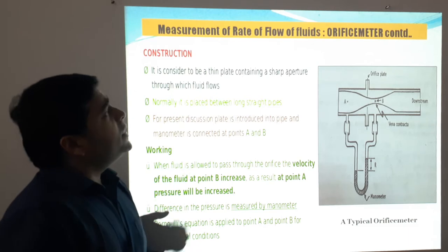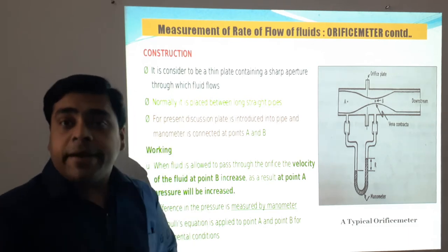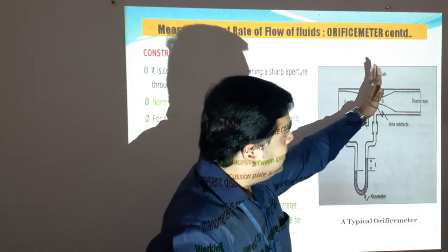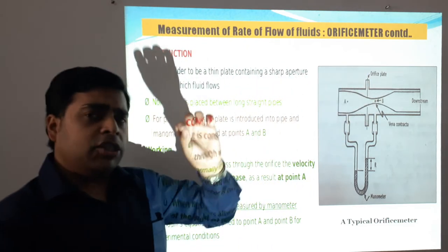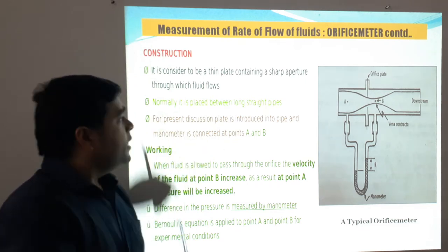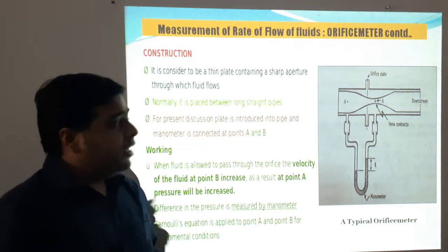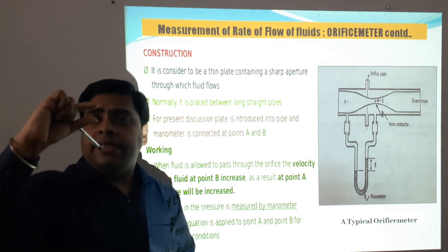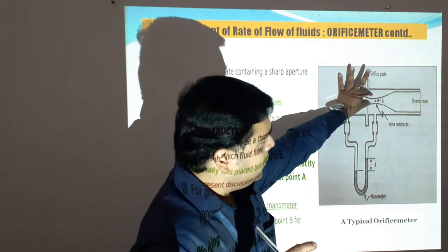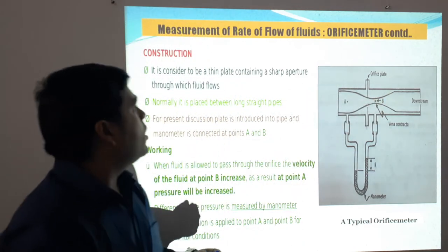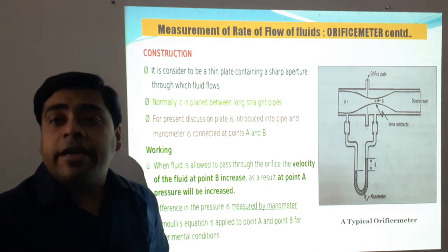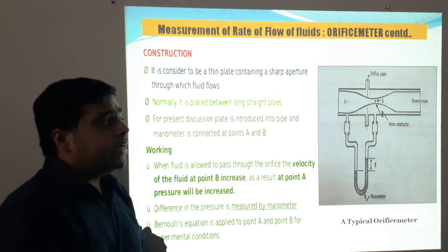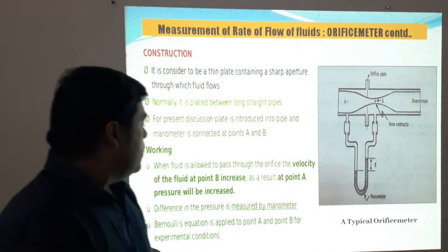Regarding construction: it is a thin plate containing a sharp aperture through which fluid flows. Inside the pipe, the plate creates a thin aperture for the fluid. It is generally placed between long and straight pipes. For our discussion, the plate is introduced into the pipe and a manometer is connected at points A and B.